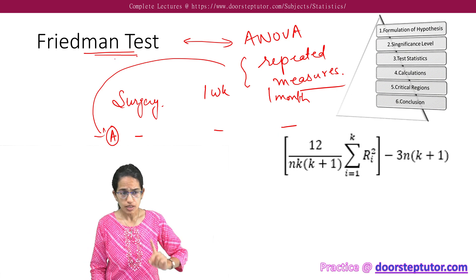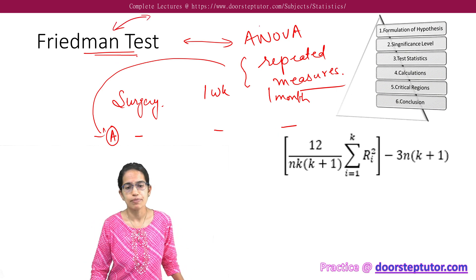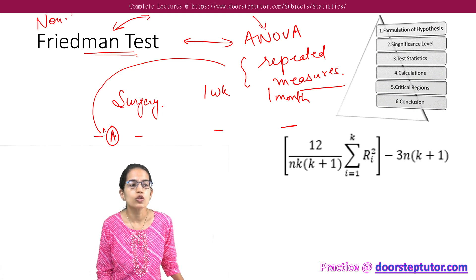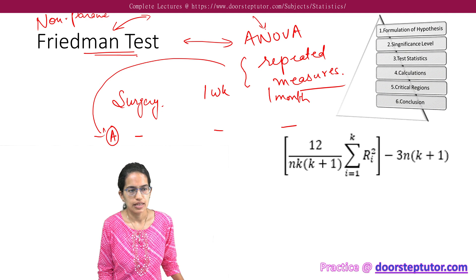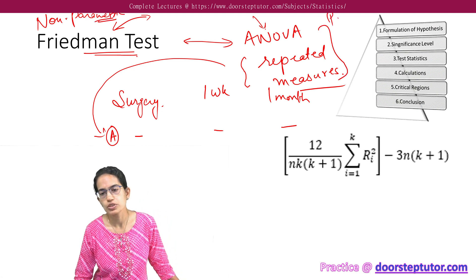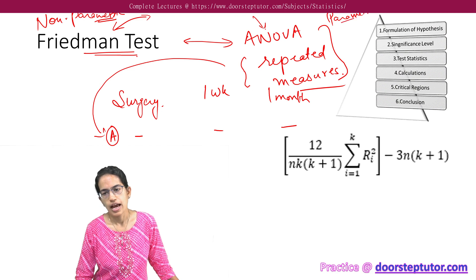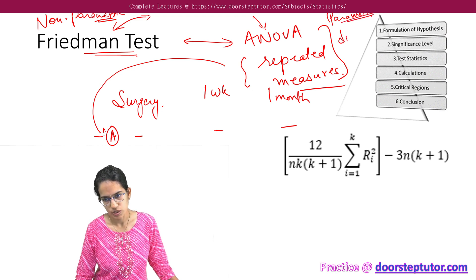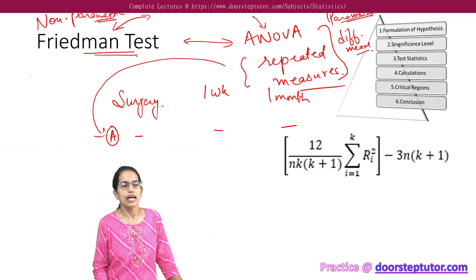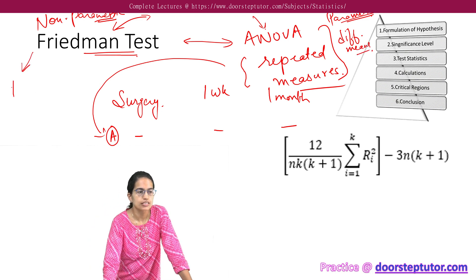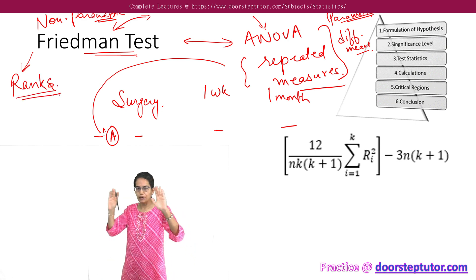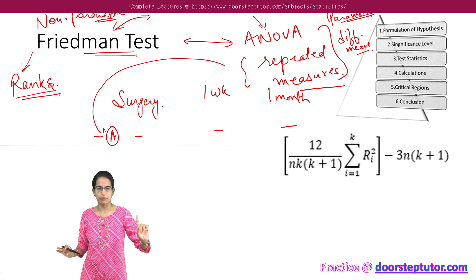One very important difference between the Friedman test and ANOVA repeated is the Friedman is a non-parametric test. However, where do we use ANOVA repeated measures? We use it as a parametric test. And since it is a parametric test, what is studied here is difference of means. However, under Friedman test, we would understand it based on ranks. So this is a simplified understanding of Friedman test.